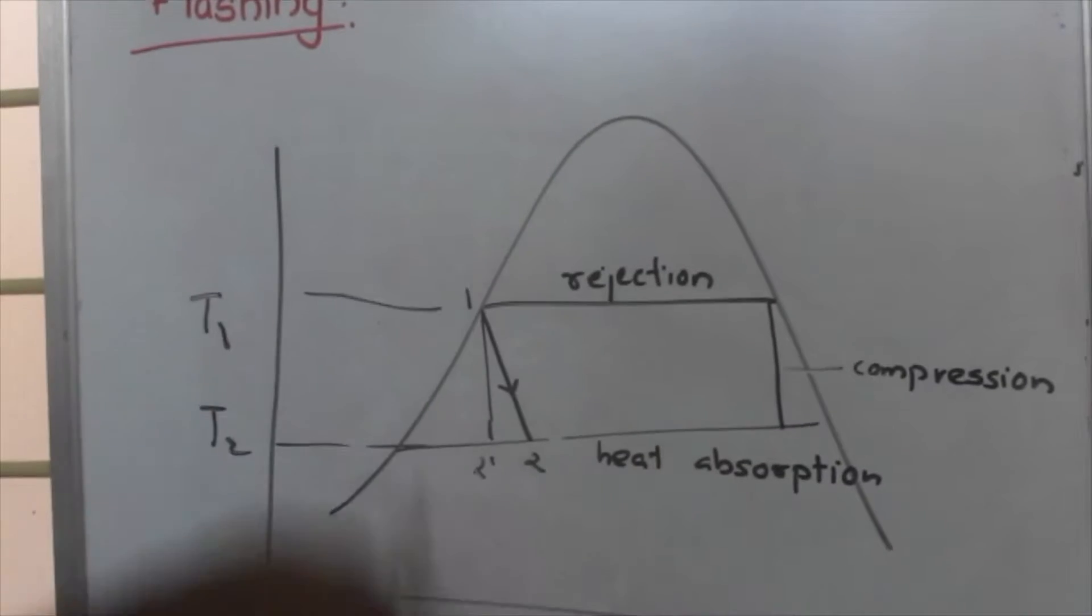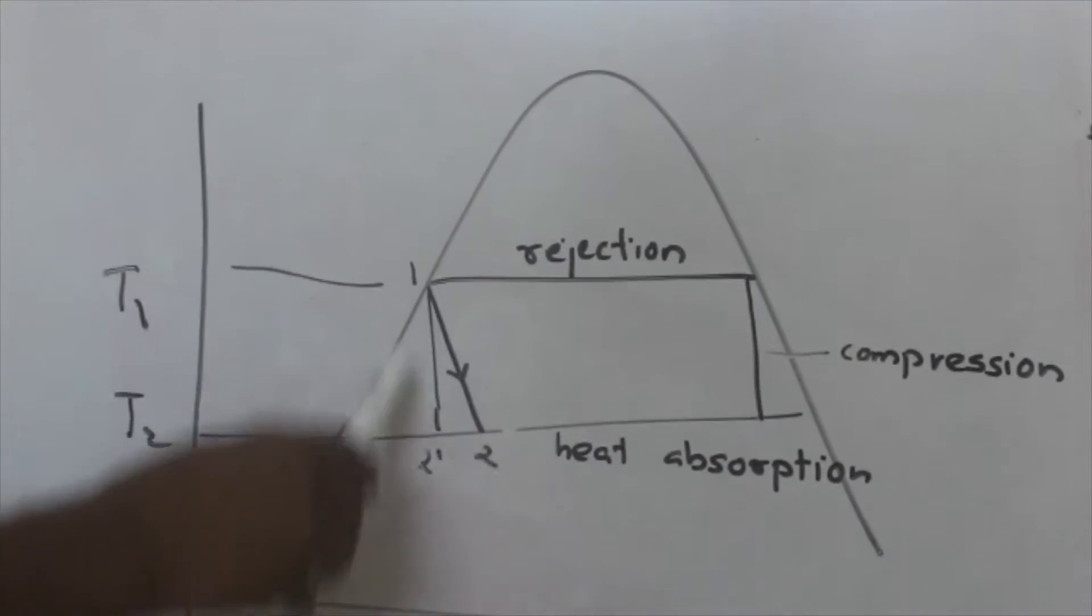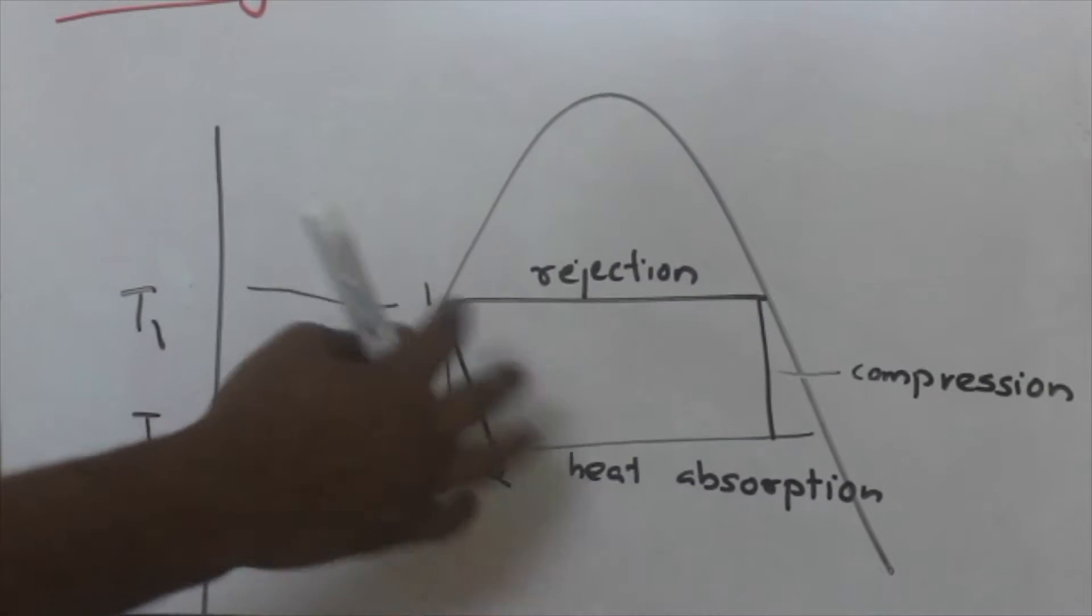So let's discuss about flashing. This is the basic refrigeration cycle where there is heat absorption, compression, rejection, and then there is an expansion.